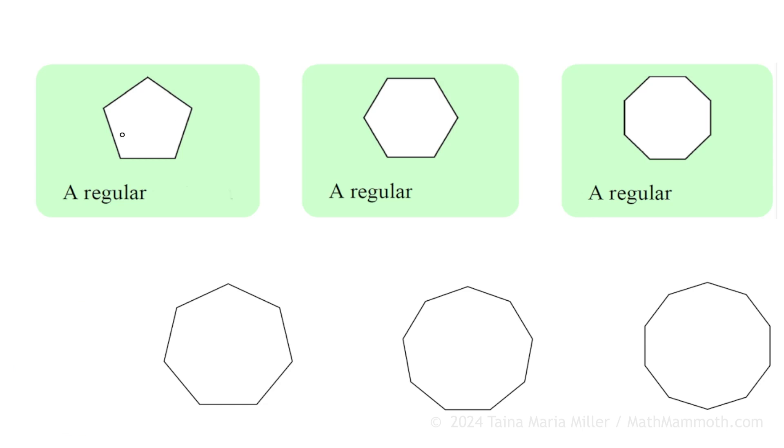Now, this one here, what do you call it? You count the vertices. Five, so it is called pentagon, but this one is a regular pentagon. Next one has six vertices and notice how each side is the same length, each angle is the same measure. A regular hexagon, yes. And this one, now we have eight vertices, so it's called a regular octagon.